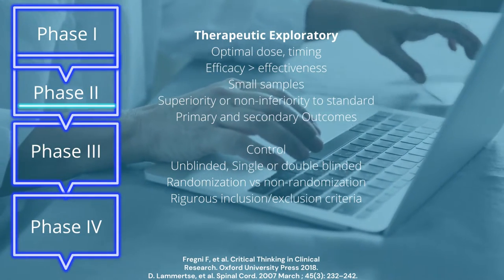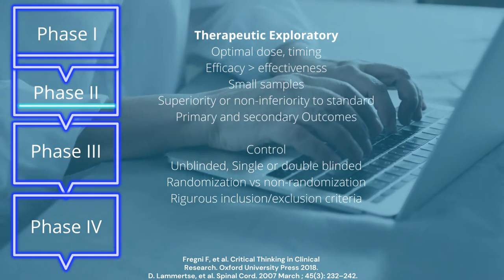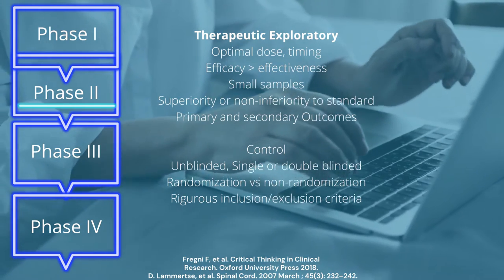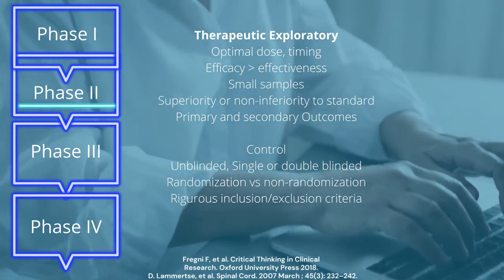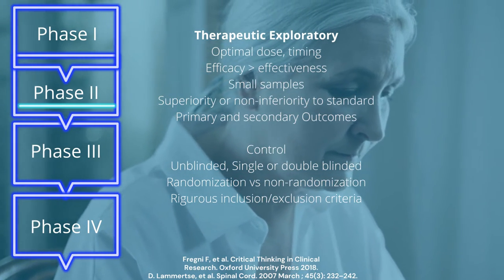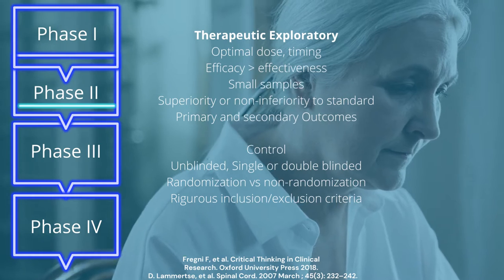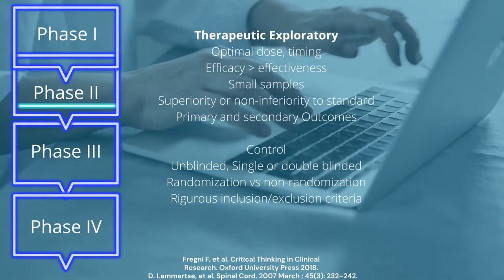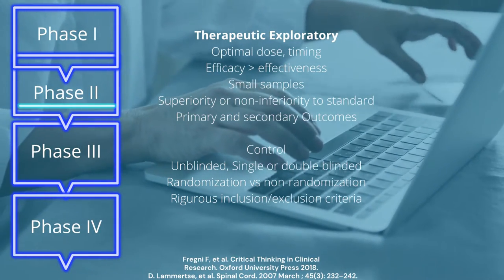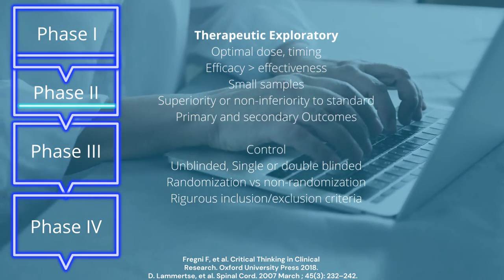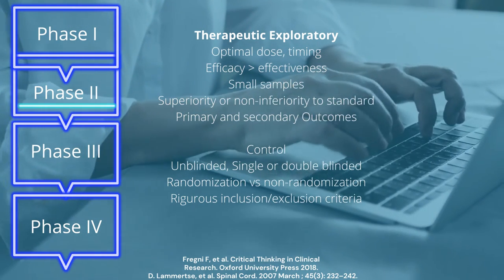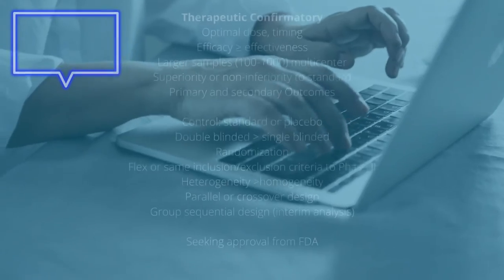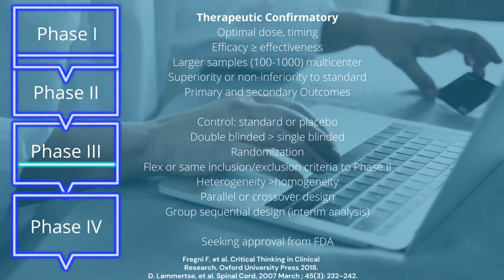In Phase 2 studies, also called therapeutic or exploratory, it is more prone to measuring efficacy rather than effectiveness. Still with small samples of participants, it may demonstrate either superiority or non-inferiority to standard treatment. A control population is suggested, and they can be either blinded, single-blinded, or unblinded. Randomization or non-randomization depends on the trial and the ethical and legal perspectives.